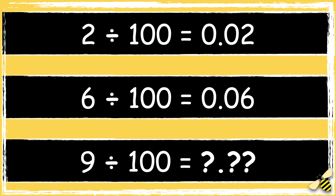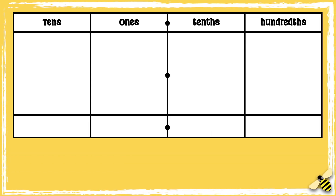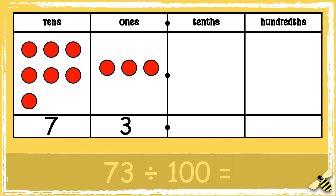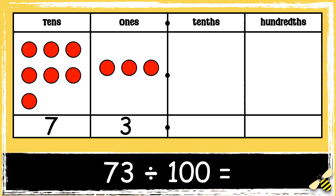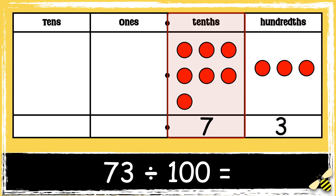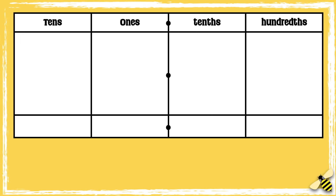Now let's look at two digit numbers divided by a hundred. Seventy three divided by a hundred. When we divide two digit numbers by a hundred, both digits need to move two places to the right. So three ones become three hundredths and seven tens become seven tenths. We need to use zero as a placeholder to show that there are no ones. So the answer is zero point seven three.